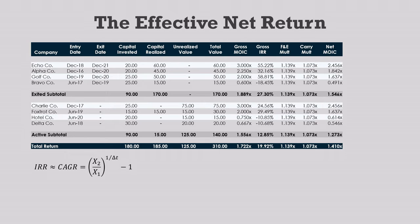Let's assume that we can model a net IRR in the same way. This would be the net multiple of invested capital, which we already have, raised to the power of 1 over delta t prime, minus 1. Now, it would be tempting to use each investment's holding period as a proxy for each delta t, because we could calculate that from the entry and exit dates on the table. But this will give us the wrong answer most of the time. That's why we put an apostrophe after delta t — it's not a holding period, but an effective holding period.